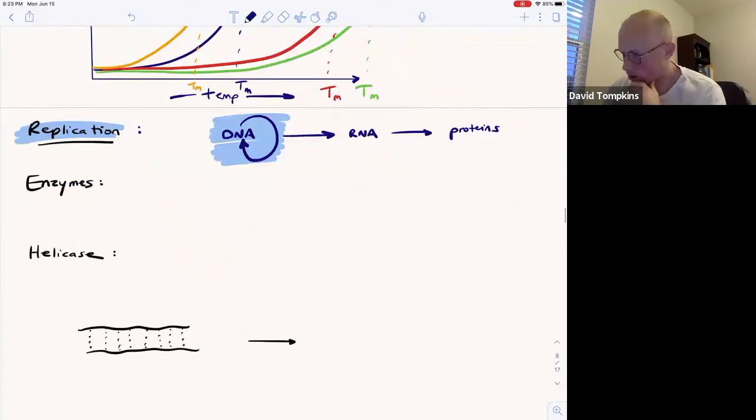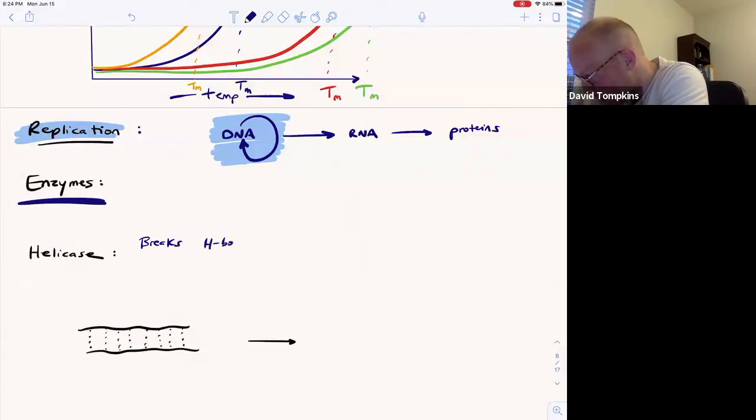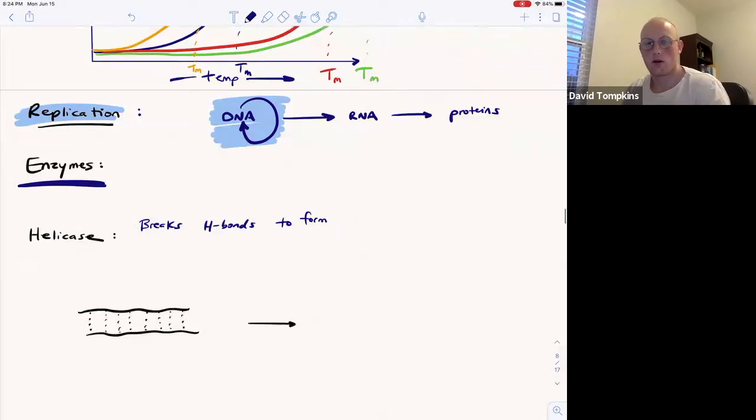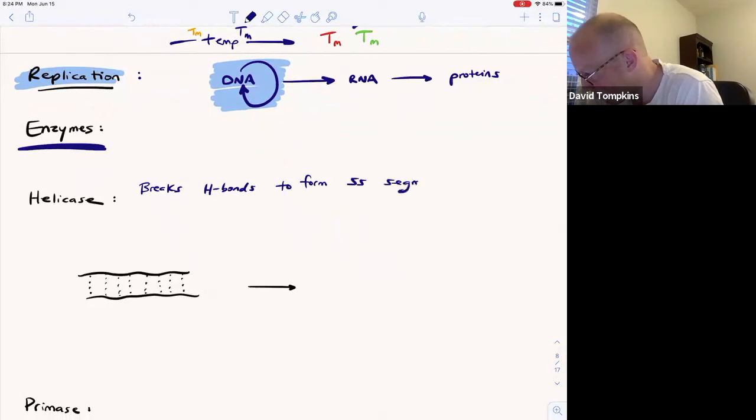So there are many enzymes that are involved in the pulling apart of the double helix and then the binding of appropriate enzymes, the replication, and the sealing back together of the double helix. And the first of those is helicase. Helicase is going to serve to break hydrogen bonds. You would imagine it probably has some amino acids that are going to go in and interfere by forming their own hydrogen bonds.